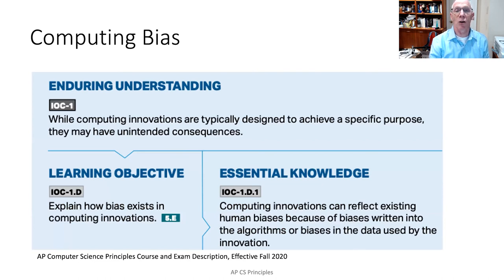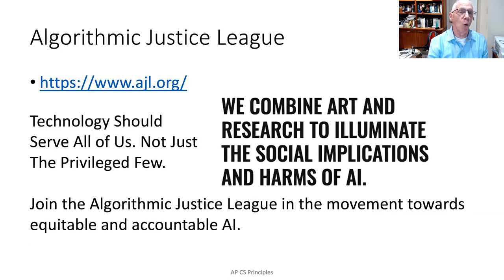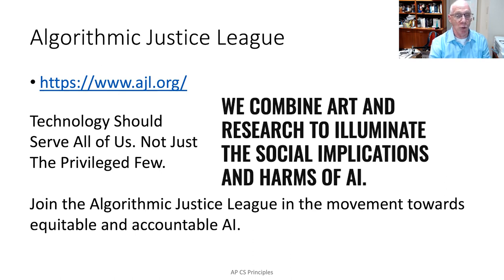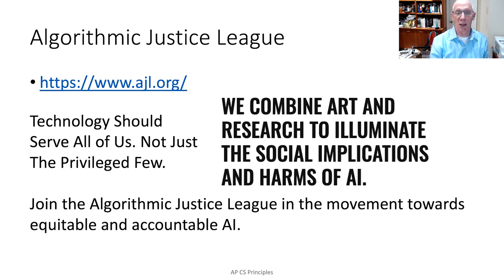These same effects with machine learning also have an example in computing bias. We're going to see a couple of examples of how that bias works and how understanding it is important in doing computing and computer science to benefit everybody. One place you can find more information is at the aptly named Algorithmic Justice League, ajl.org. They say they combine art and research to illuminate the social implications and harms of AI, and they recognize the benefits of AI. They say that technology should serve all of us, not just the privileged few. They recognize that there are great reasons to have artificial intelligence, but those benefits should be constrained when they have harmful effects.